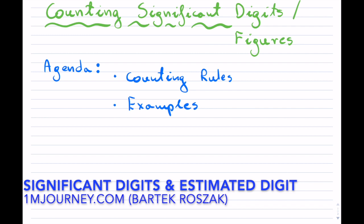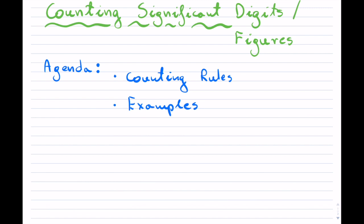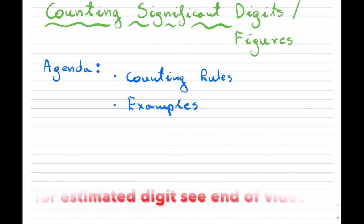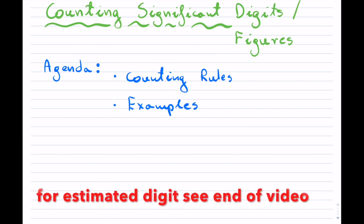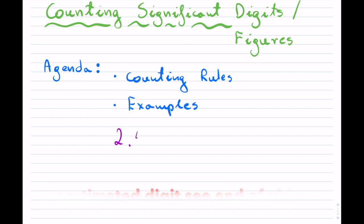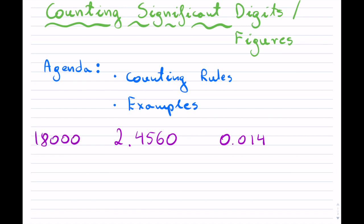In this video, I'm going to go over how to count significant digits, or sometimes people refer to them as significant figures. I like to call them just sig figs. So if you're given a decimal number, you may be asked how many significant digits does this have. We should be able to answer that for any of these questions. I will tell you the rules, and then I will go through some examples.